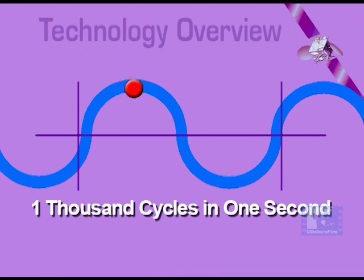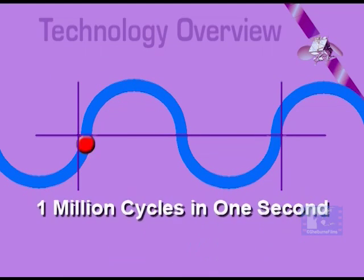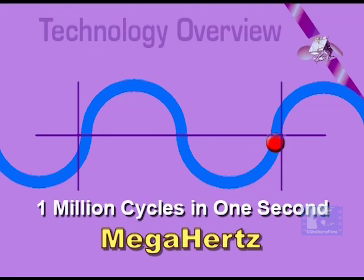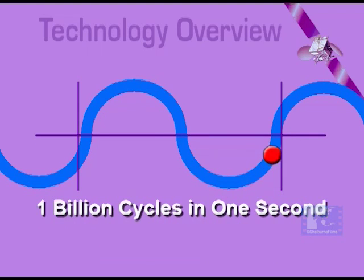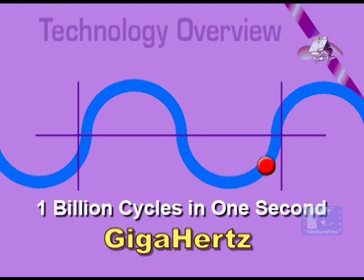One thousand cycles per second is abbreviated one kilohertz, one million a megahertz, and one billion a gigahertz.